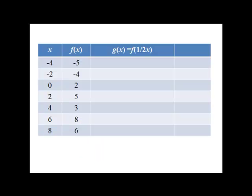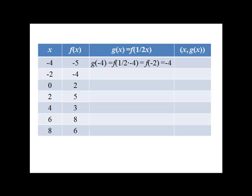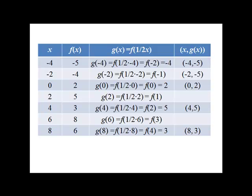Let's see if the reverse holds by checking f of one-half x. If the reverse holds, we would expect this to stretch the graph. So we'll look at the x, g of x points. We can calculate g of negative 4: f of one-half times negative 4 is f of negative 2, which we can calculate as negative 4. We're going to be pulling that y value from the line below to get this point. Doing the rest, we get some points that we can plot. Notice the gaps now — the numbers have moved away from the y-axis.